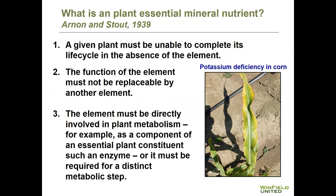Our next learning objective is to review essential nutrients and their roles within the plant. Essential mineral nutrients for plants have been known for quite a while. Back in 1939, researchers established three different criteria for the role of a plant essential mineral nutrient. The first is that a given plant must be unable to complete its life cycle in the absence of the element — demonstrated in hydroponic situations where nutrients can be completely withheld. If you completely withhold nitrogen from a plant grown hydroponically, it will not survive, and the same is true for the other essential nutrients.